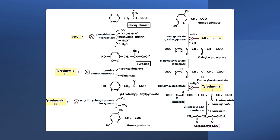If there is deficiency in the tyrosine aminotransferase enzyme, the case is usually described as tyrosinemia, with excess tyrosine in the blood. This is a very rare case and not of major importance.